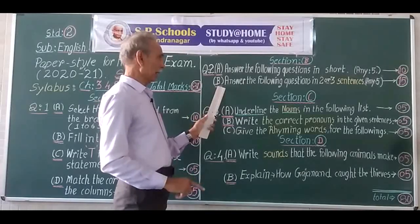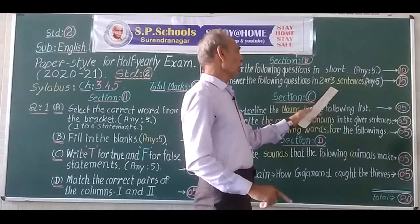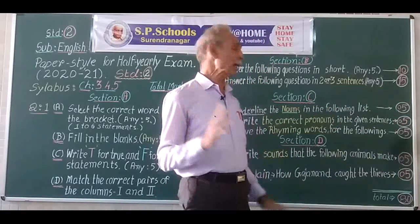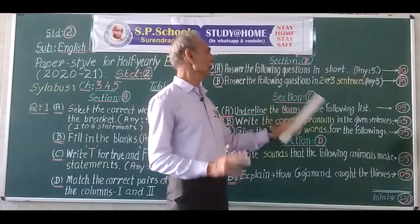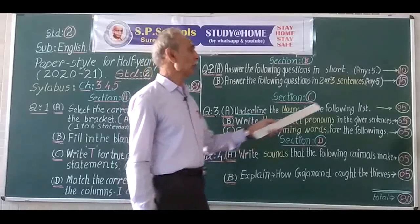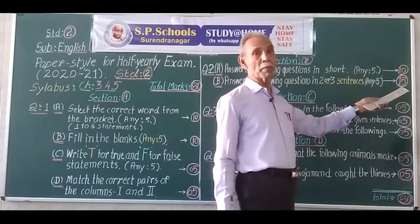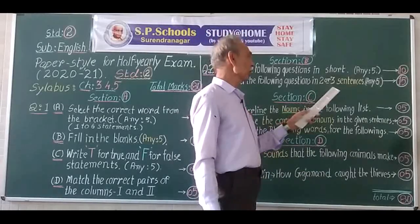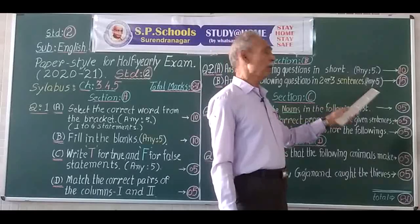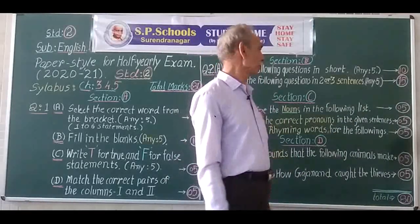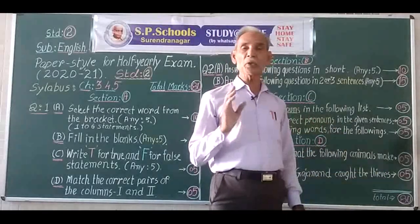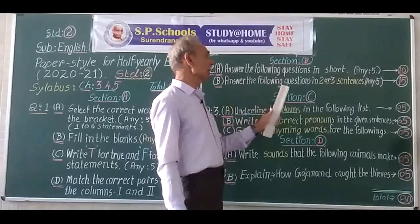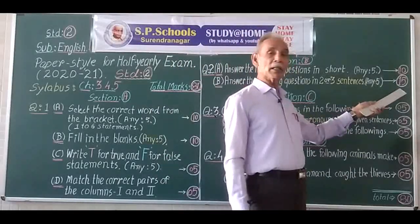Question 2B: answer the following questions in 2 or 3 sentences. You will be asked 6 questions and have to answer any 5. You have to write any 5 to get 15 marks. Pay proper attention for this question because it carries a lion's share — you need to write in at least 2 to 3 sentences per answer.